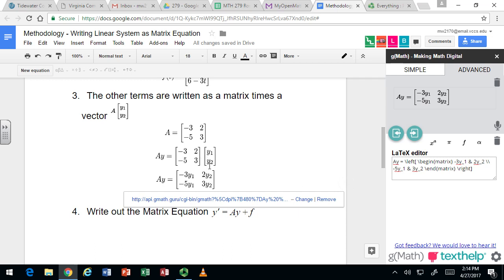So multiplying the first row times the column vector gives us the first row. And then multiplying the second row times the column vector gives us the second row. And of course, those are the terms that showed up in the differential equation.